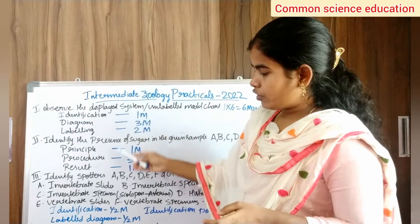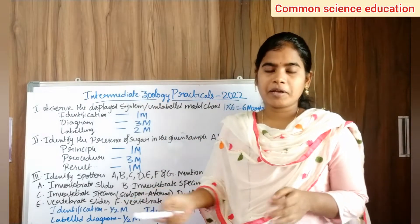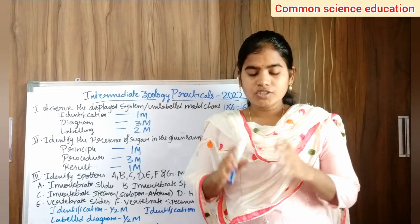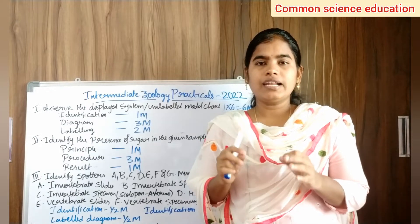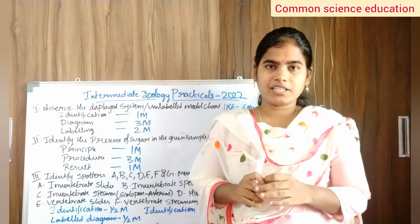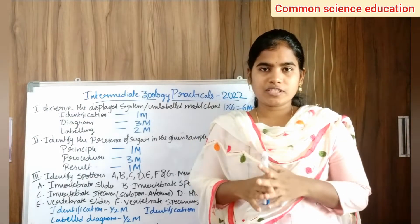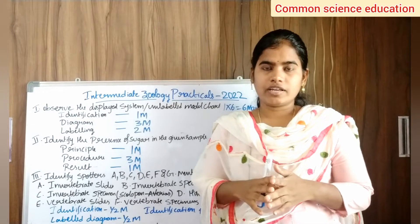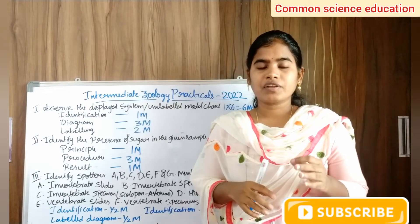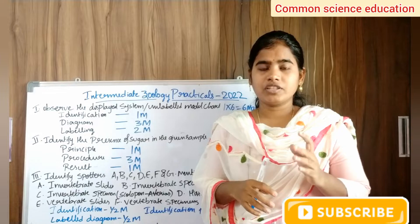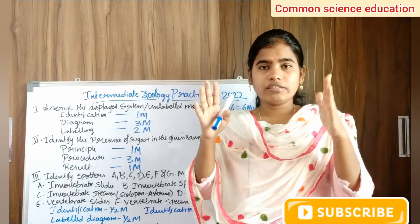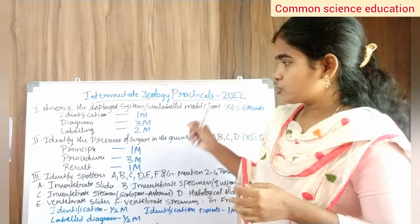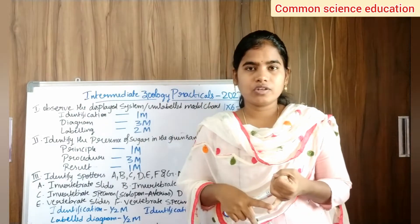We have 4 Roman numbers. In Roman number 1, we are going to talk about unlabeled charts. We will talk about the cockroach system — cockroach mouth parts, cockroach digestive system, and respiratory and nervous system. We will cover these three systems.